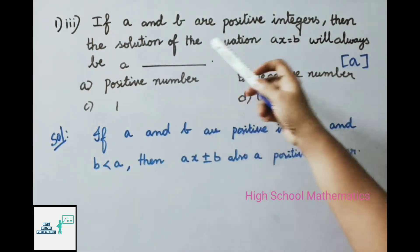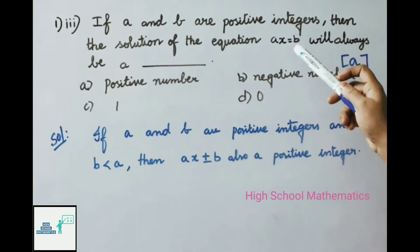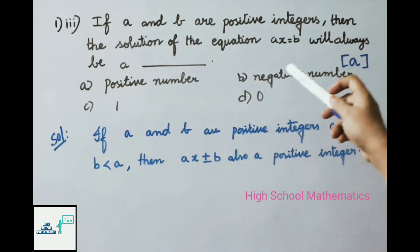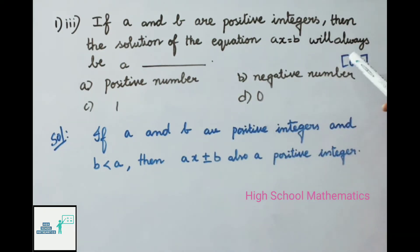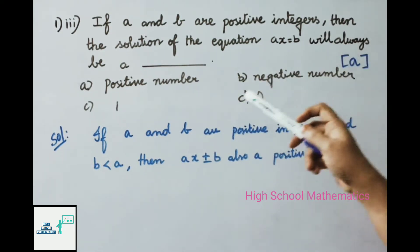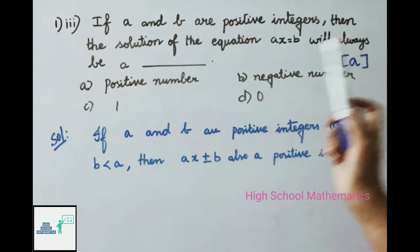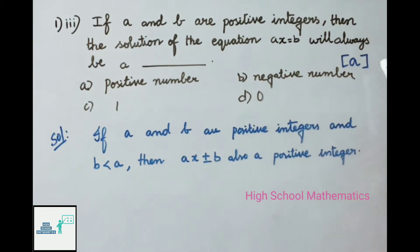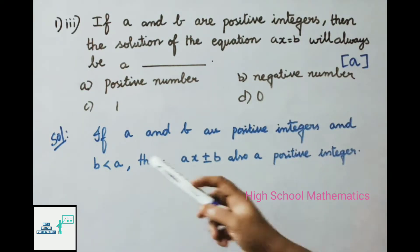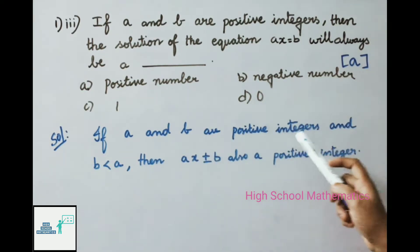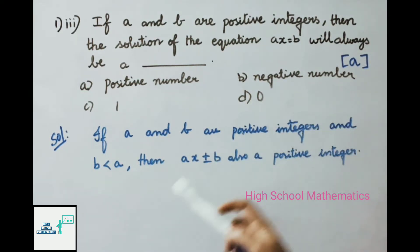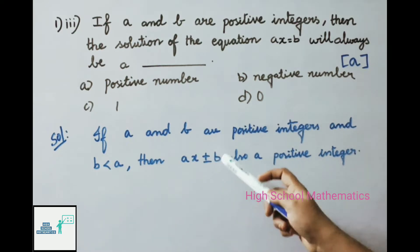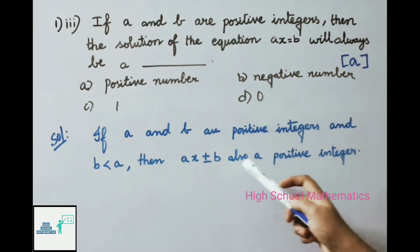Third question: if a and b are positive integers, then the solution of the equation ax = b will always be a positive number. Our answer is option A: positive number. If a and b are positive integers and b is less than a, then ax ± b is also a positive integer.